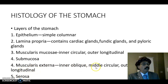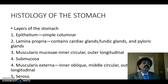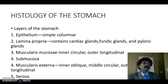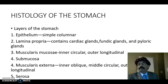The muscularis externa layers are all smooth muscle. Outside the muscle we have the serosa, because the stomach is an intraperitoneal structure — so it is not adventitia, it is serosa. It is lined on the outside by simple squamous epithelium, which is the mesothelium, also called the visceral peritoneum.